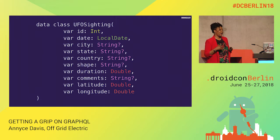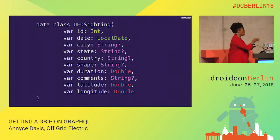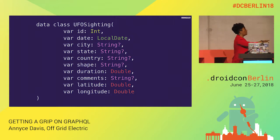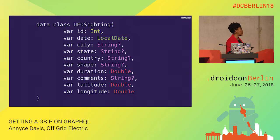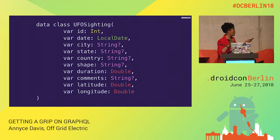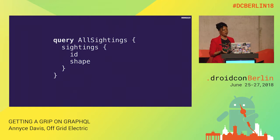For today's reference implementation, the data we're going to be working with is a UFO sighting. It has all these different fields: the date of the sighting, city, state, country, the shape of the sighting, comments, and more. This is an example of a GraphQL query — it also contains keywords that determine the results.